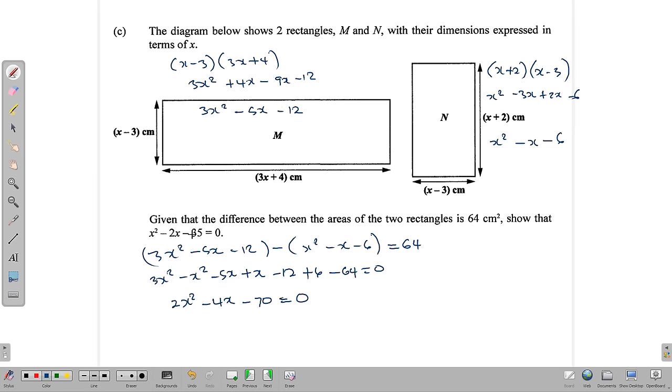But you may notice here that these numbers are simply half of these. So we can take this expression and divide it by 2. And in dividing it by 2, we notice that 2x squared divided by 2 gives us x squared. Minus 4x divided by 2 gives us minus 2x. And minus 70 divided by 2 gives us minus 35. So we have shown that if the difference between the areas is 64, then this expression actually represents that. And that takes us to the end of our question.